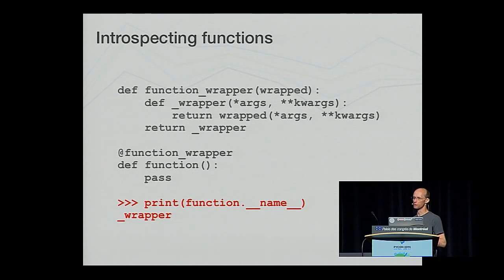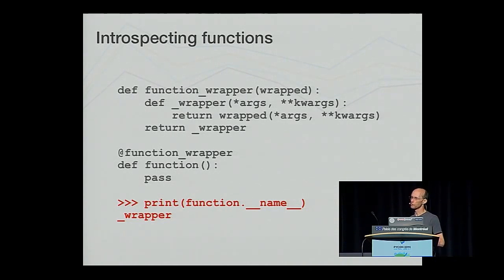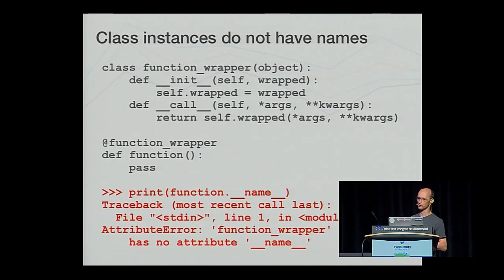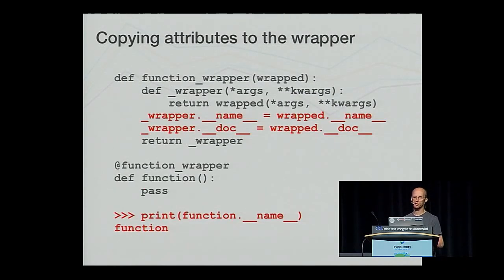When we talk about functions, we expect them to specify properties which describe them as well as document what they do. These include the __name__ and __doc__ attributes. When we use a wrapper, though, this no longer works as we expect — in the case of using a function closure, the details of the nested function are returned. If we use a class to implement the wrapper, as class instances do not normally have a __name__ attribute, attempting to access the name of the function will result in an attribute error exception. The solution when using a function closure is to copy the attributes of interest from the wrapped function to the nested wrapper function, resulting in the function name and documentation strings being correct.